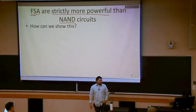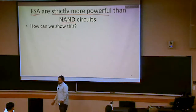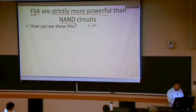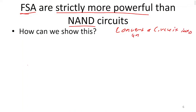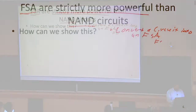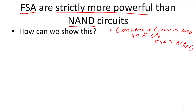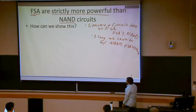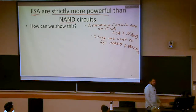How can we show that finite state automata can do everything NAND can do and more? We can show how to convert a circuit into a finite state automaton. That first part shows FSA are greater than or equal to NAND circuits. If we also find one language we can't do with NAND but can do with finite state automata, then we can conclude that finite state automata are strictly more powerful. So we need to find at least one thing FSA can do that NAND cannot.